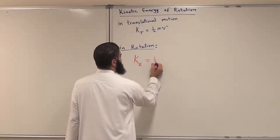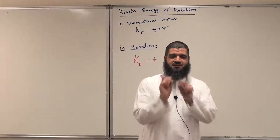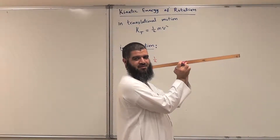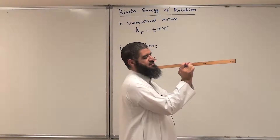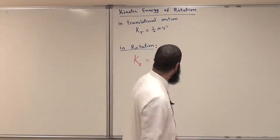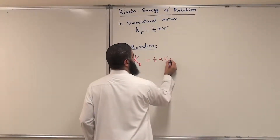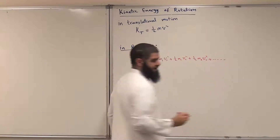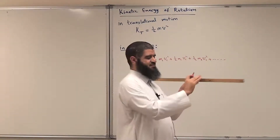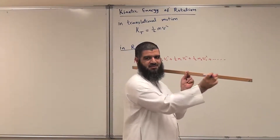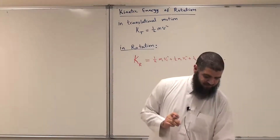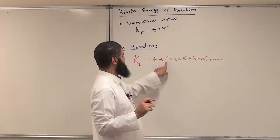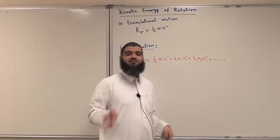This will be one-half times — I need to divide my object into small masses. I have this axis of rotation, and I have a small mass m1 multiplied by its velocity, plus m2, m3, m4 — many many small particles. So I have: one-half m1 v1 squared, plus one-half m2 v2 squared, plus one-half m3 v3 squared, and so on, covering all the small masses I have divided my object into.